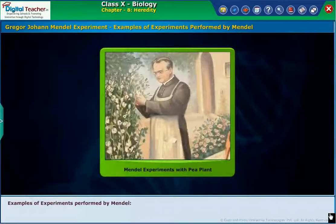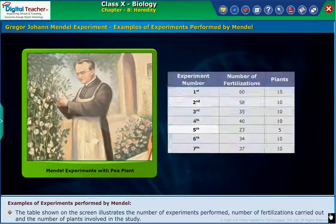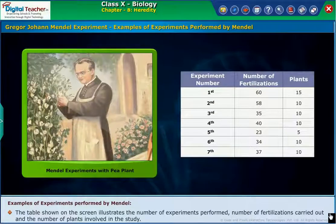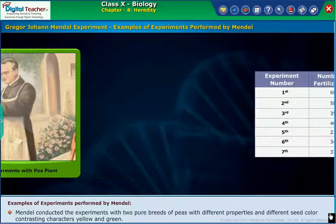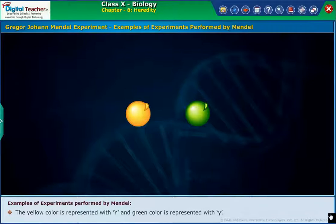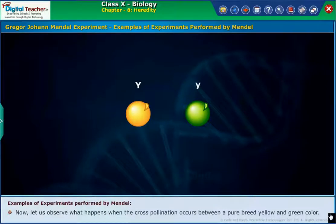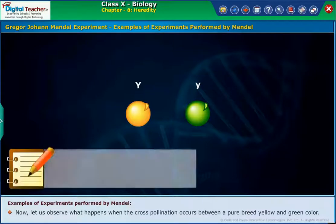Examples of experiments performed by Mendel: The table shown on the screen illustrates the number of experiments performed, number of fertilizations carried out, and the number of plants involved in the study. Mendel conducted experiments with two pure breeds of peas with contrasting seed color characters — yellow and green. The yellow color is represented with capital Y and green color is represented with small y. Now let us observe what happens when cross-pollination occurs between a pure breed yellow and green color.